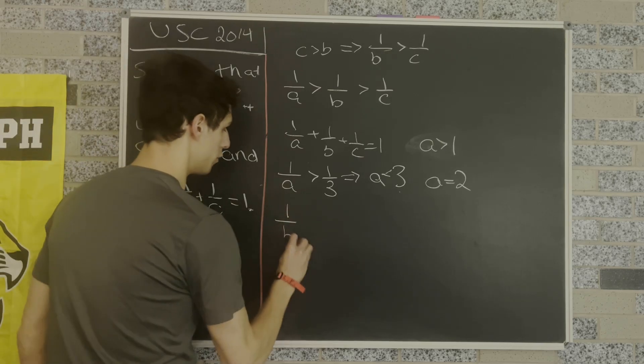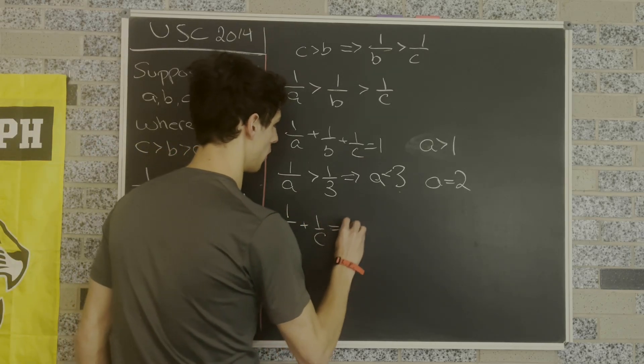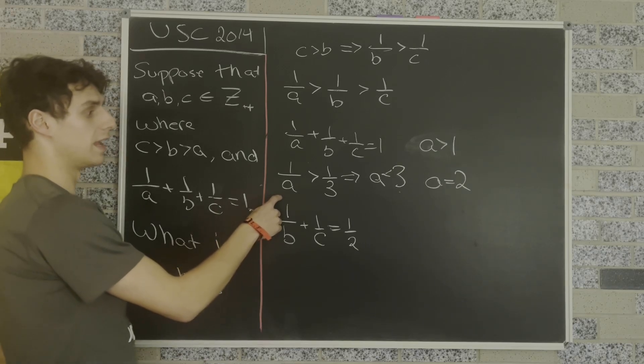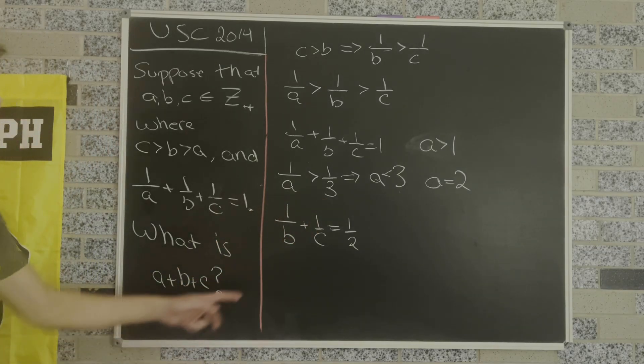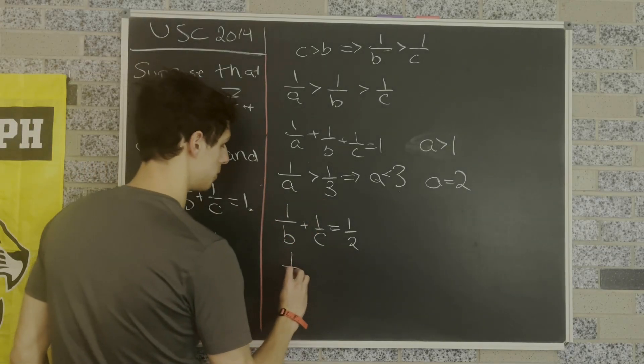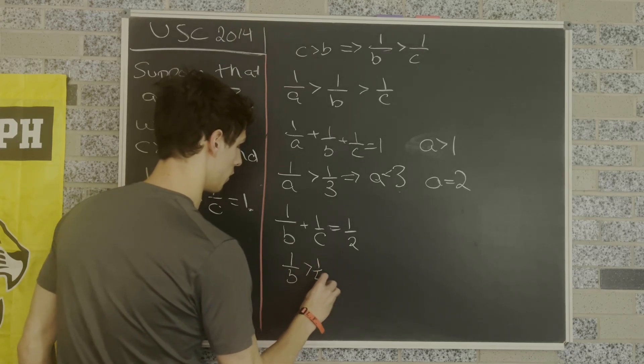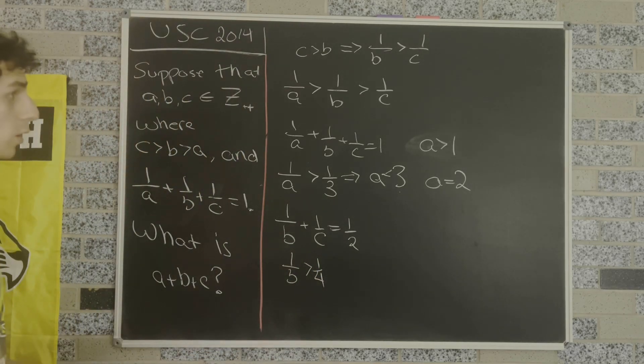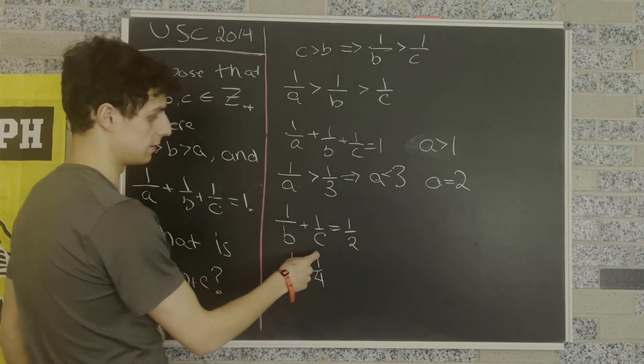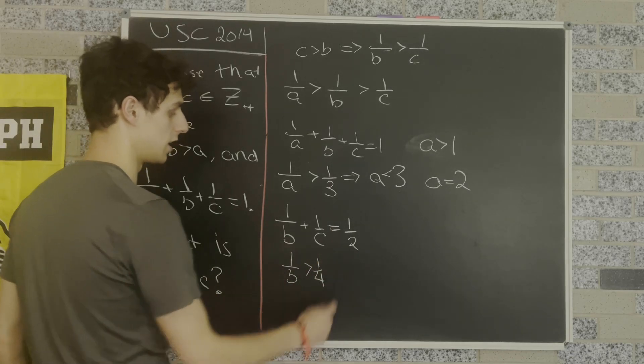Then we know that 1 over B plus 1 over C equals 1 half. Similar to our 1 over A is greater than 1 third argument, we know that 1 over B must be greater than 1 fourth, because 1 over B is greater than 1 over C, so it has to be more than half of this value here.